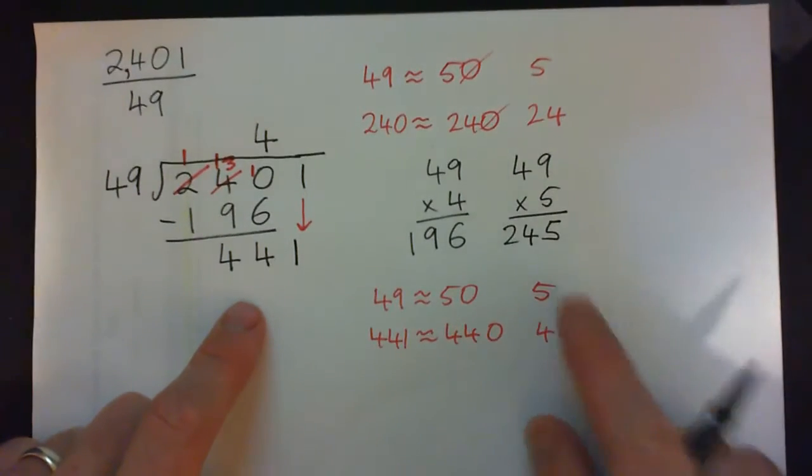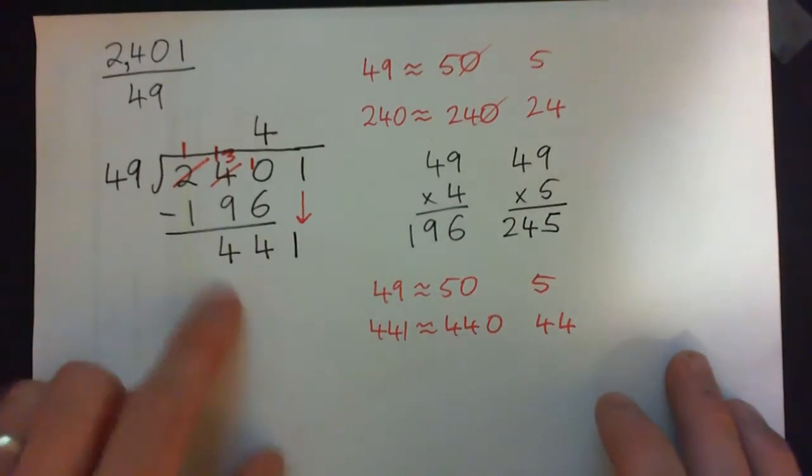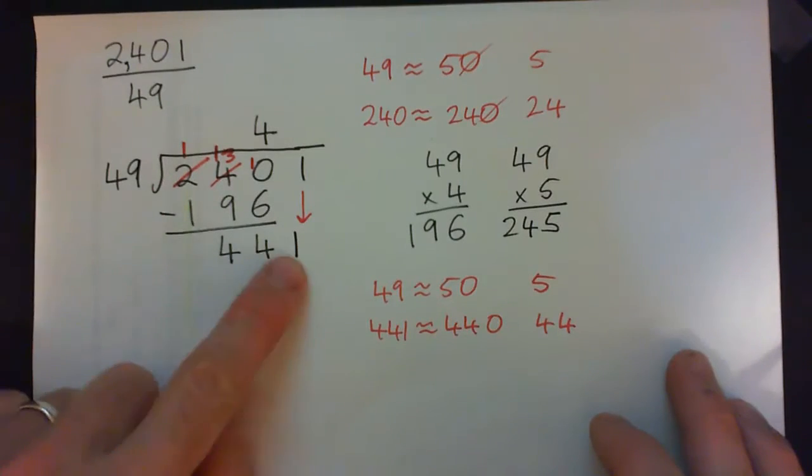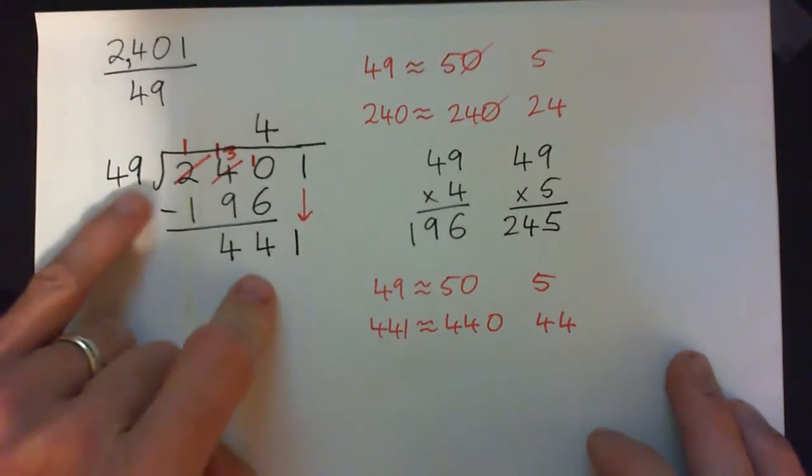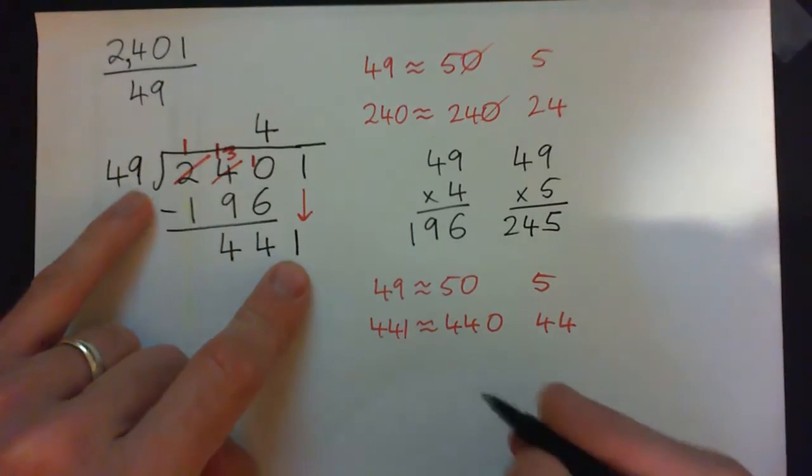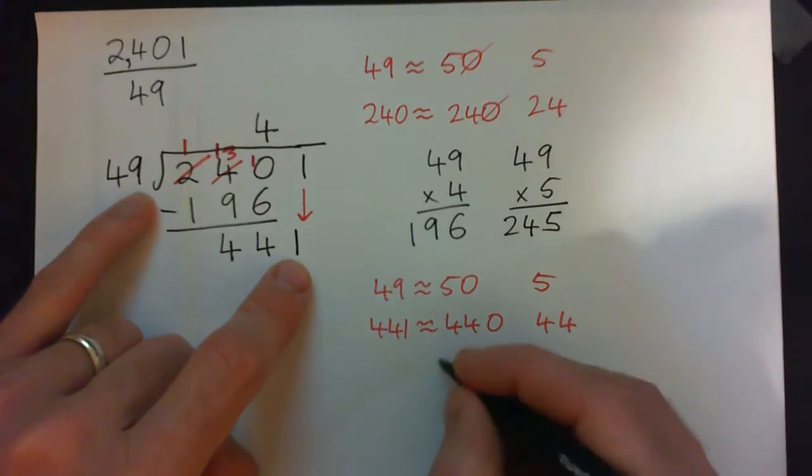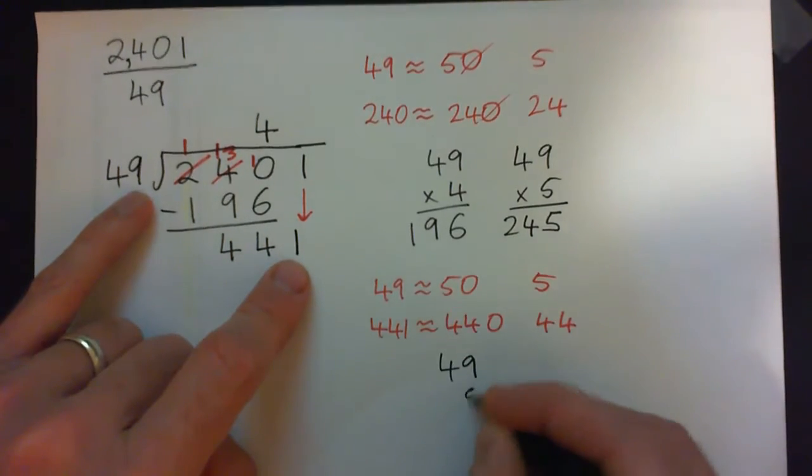Almost 9, because 5 nines is 45. I have a sneaky feeling it might be 9, because if you think about it, 9 times 9 is 81. See that? 9 times 9 is 81. So that's why when I look at it, I'm thinking I'm going to try 9. I just have a feeling that 9 is going to work.